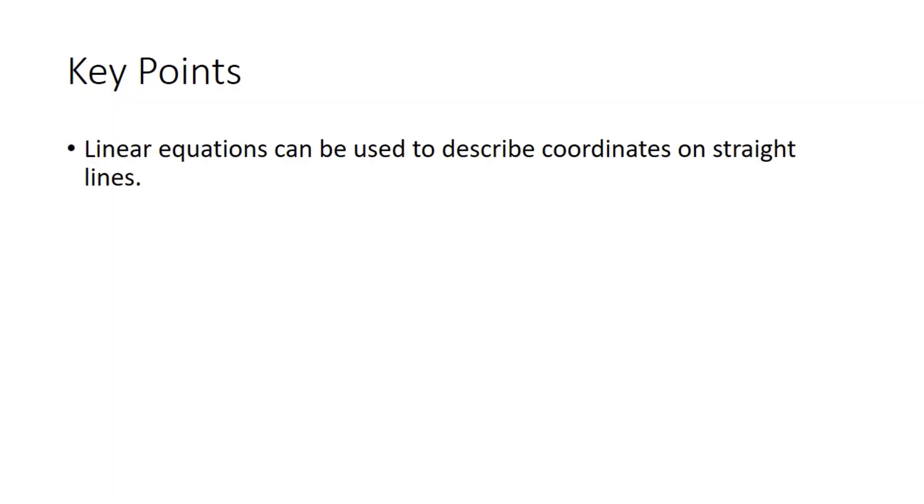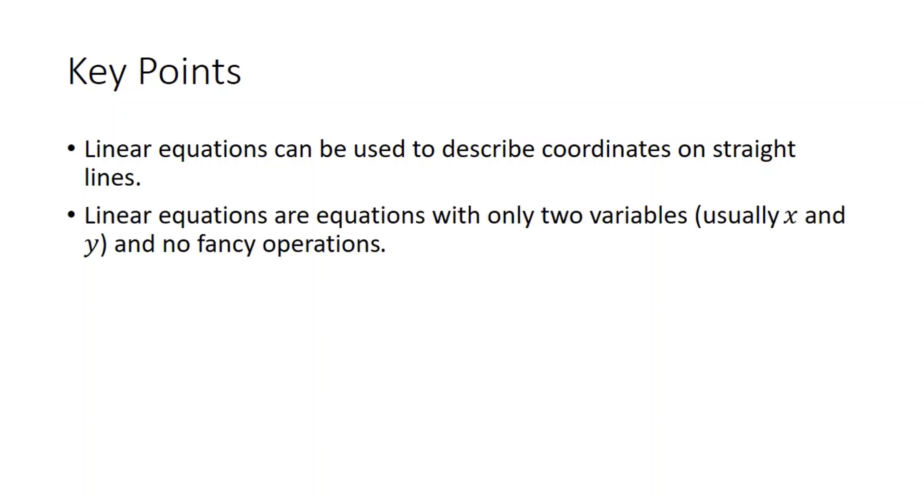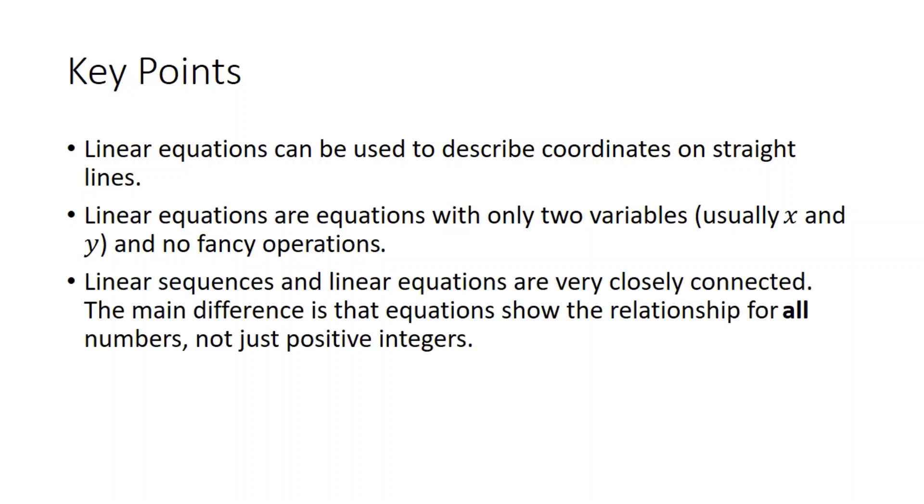OK, the key points from this video. Linear equations can be used to describe coordinates on straight lines. Linear equations are equations with only two variables. And what I'm saying is no fancy operations. So it is just a multiple of x, a multiple of y, and maybe some other numbers, nothing else being involved. Linear sequences and linear equations are very closely connected. The main difference is that equations show the relationship for all numbers, not just positive integers.